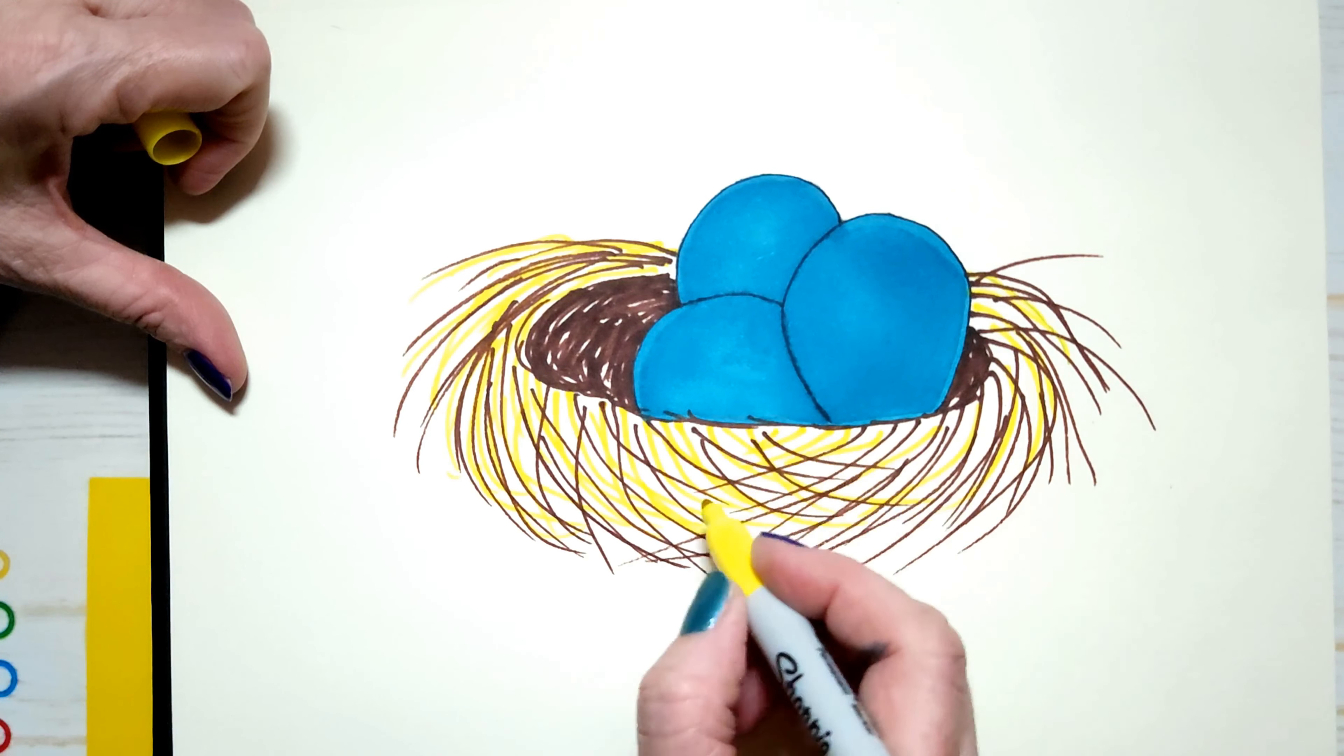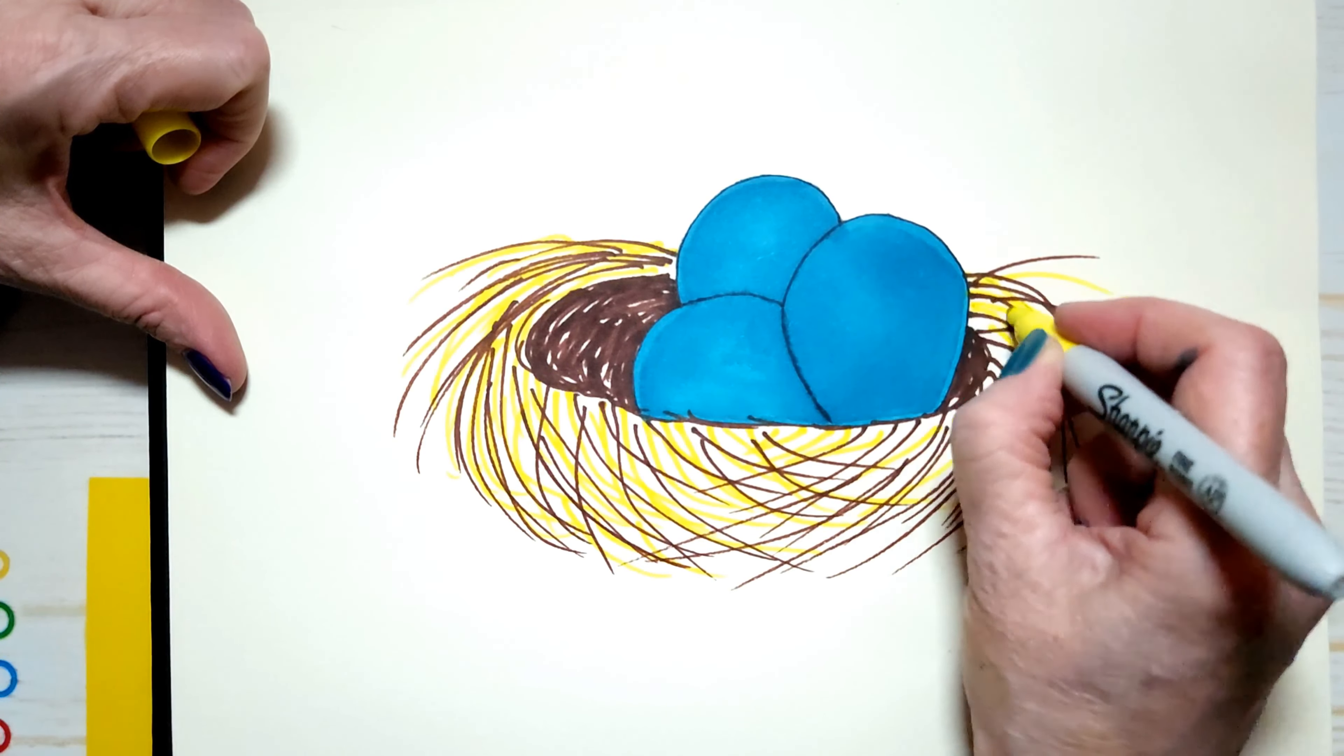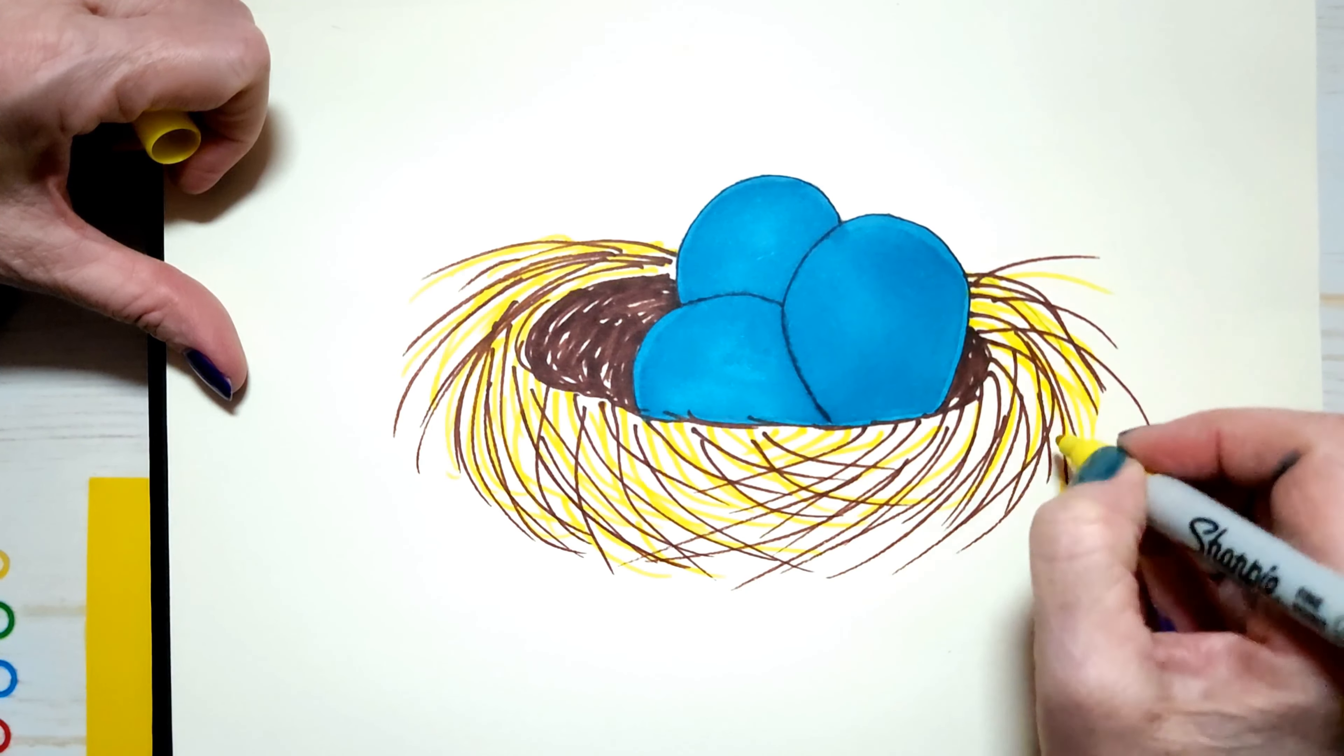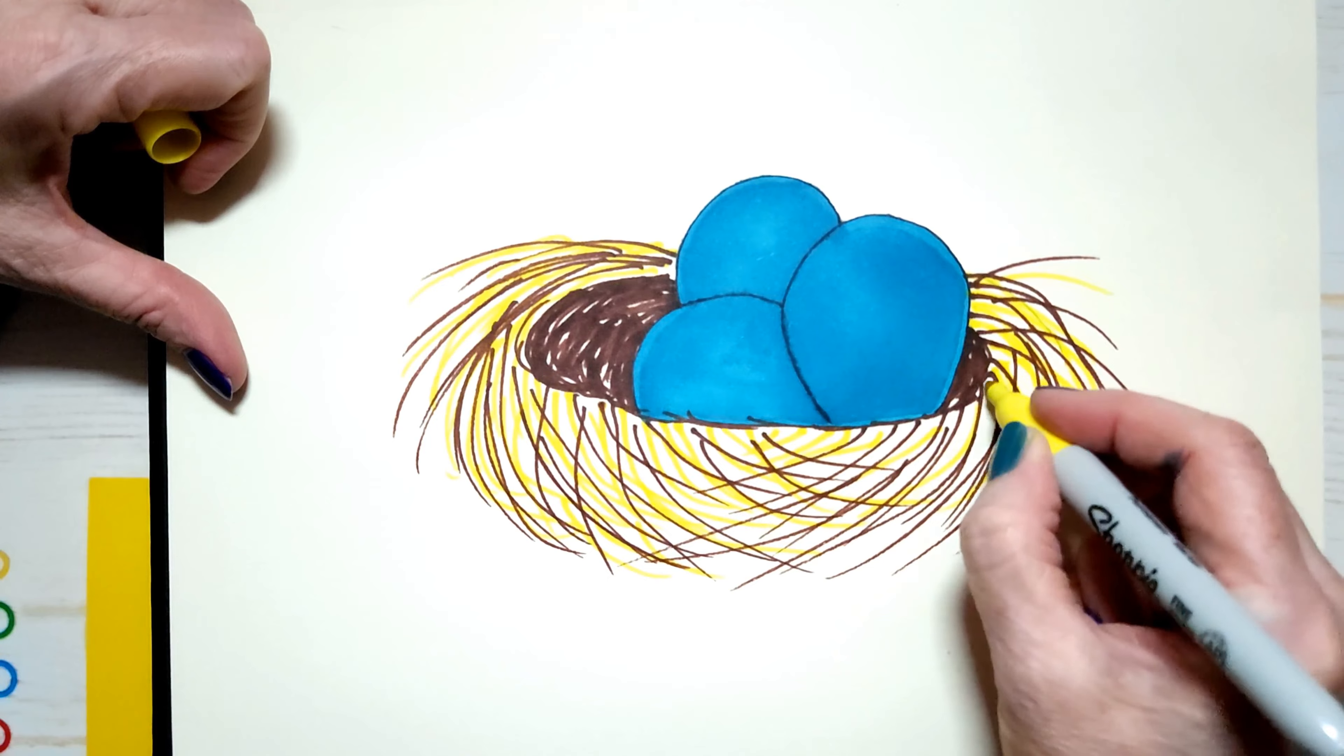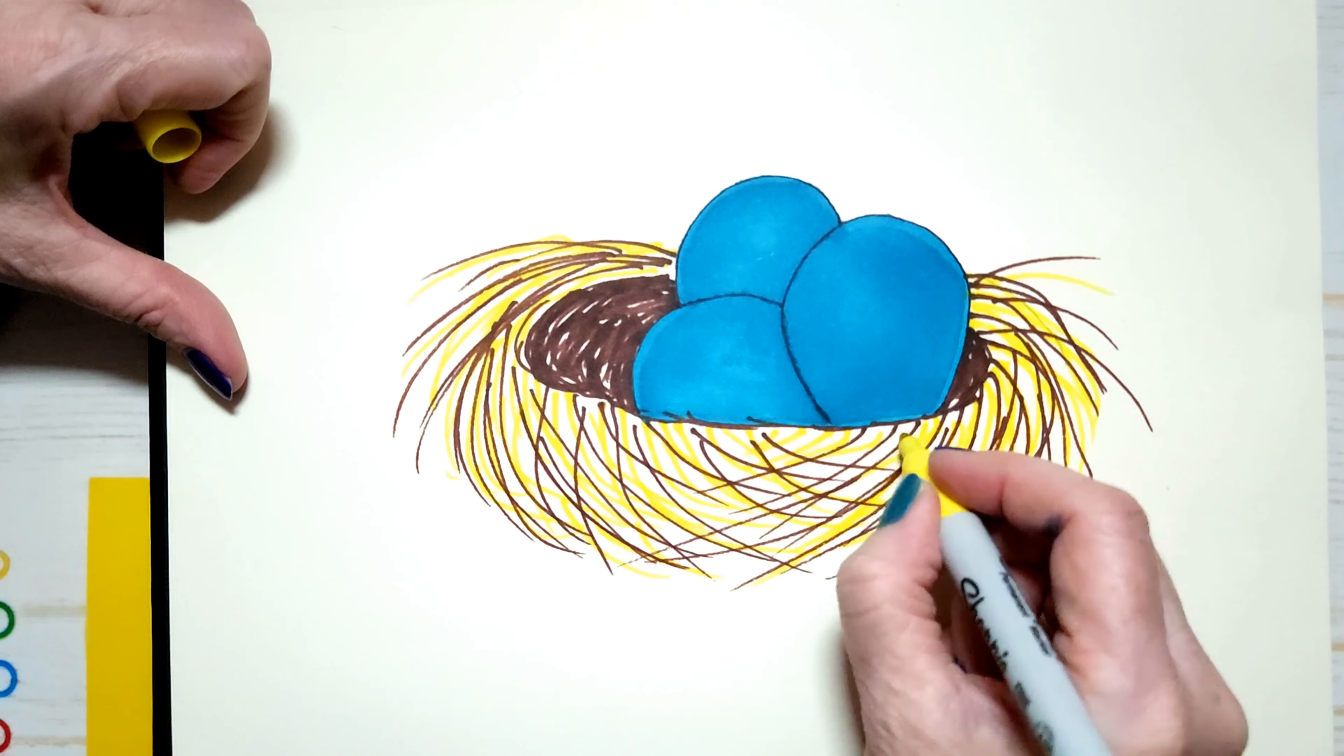You get green. And these eggs are not green. They're blue. See how easy it is? So that's all the yellow I'm going to use.